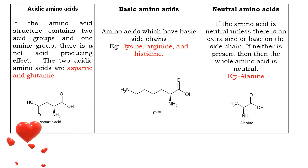Depending upon their acidic or basic character, amino acids are classified into three types: neutral amino acids, acidic amino acids, and basic amino acids. We know amino acids contain both an acidic COOH group and a basic NH2 group. If an amino acid contains one NH2 group and one COOH group, the amino acid becomes neutral.